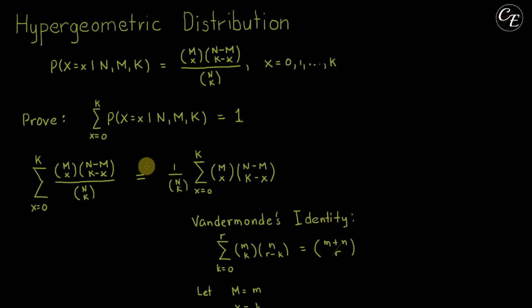Hello everyone. In this video, I'm going to explain to you the proof that the summation of the probability mass function of the hypergeometric distribution is equal to 1.